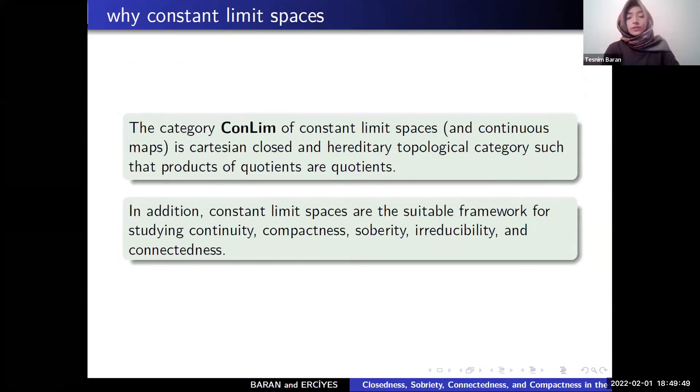The category of constant limit spaces is Cartesian closed and hereditary topological category, such that products of quotients are quotient.